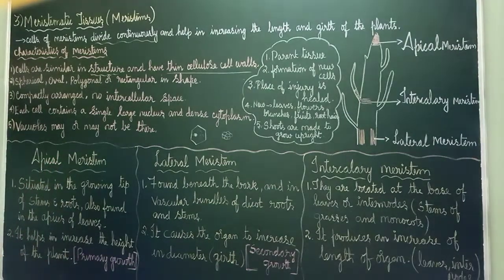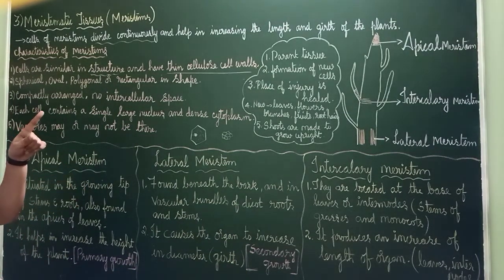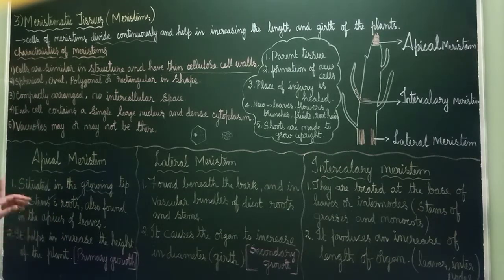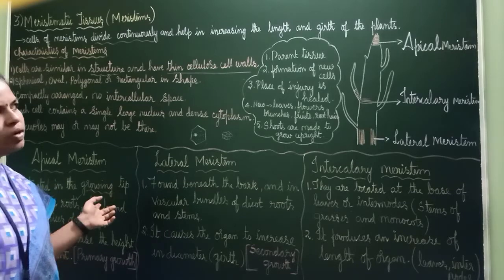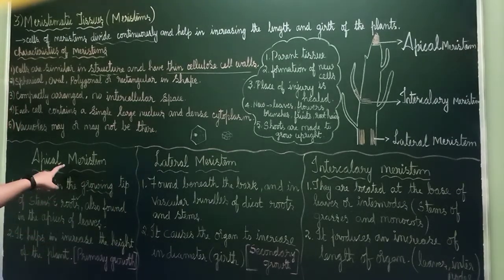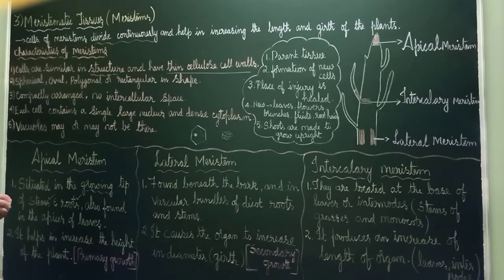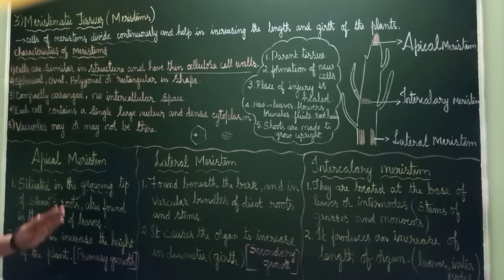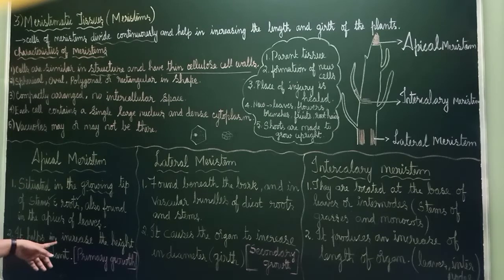Apical meristem is situated in the growing tip. It is seen in the growing tip of stems as well as roots, and also found in the apices of leaves. It helps in increasing the height of the plant. It is only helpful in primary growth, not secondary growth. So it is situated in the growing tip of stem, root, and leaf tip, and it causes primary growth.